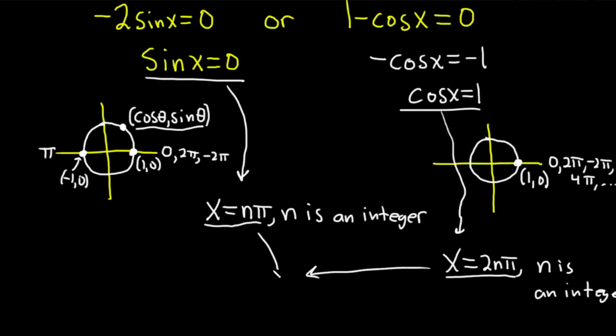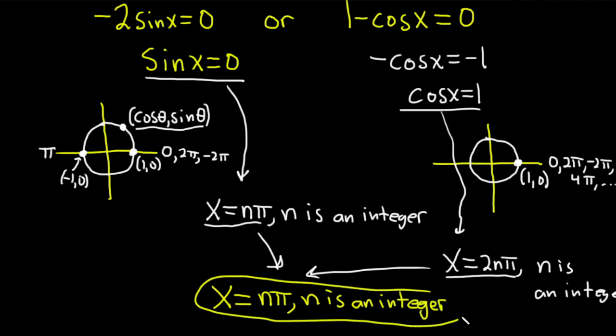Putting these two pieces together, okay, the answer, the final answer to this problem is going to be x equals n pi, where n is an integer. And again, the reason this is true is because if you think about it, this takes care of the case where x is 2 n pi.